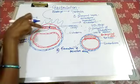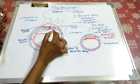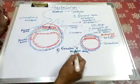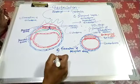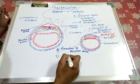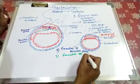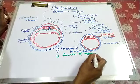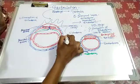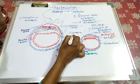In between this, the ectoderm is divided and the endoderm is divided. The second layer is proliferated and they form the third layer, which is called the mesoderm.